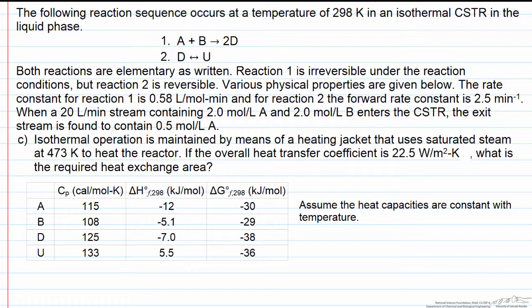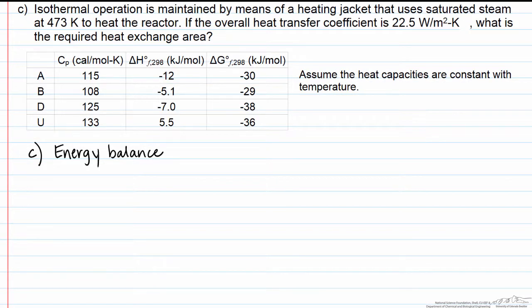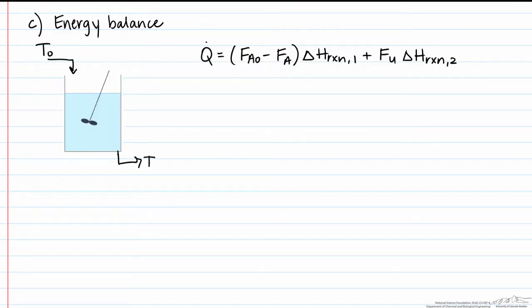To do this, we need to set up an energy balance on our system. The amount of heat that we have to add is equal to the heat required from the first reaction, given by the number of moles of A that are reacted times the heat required per mole of A reacted, and then we have a second reaction, so the heat required for that reaction will be how much U is made times the energy required per mole of U that's made.